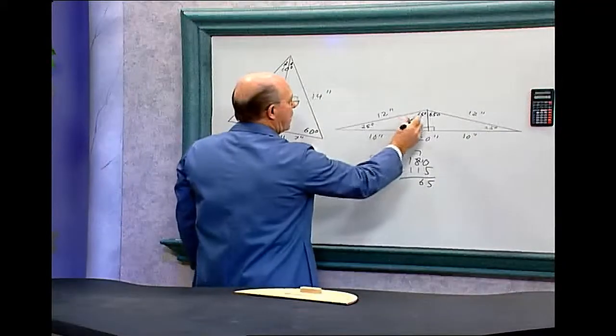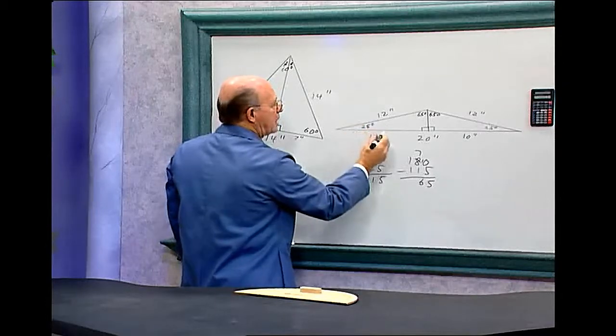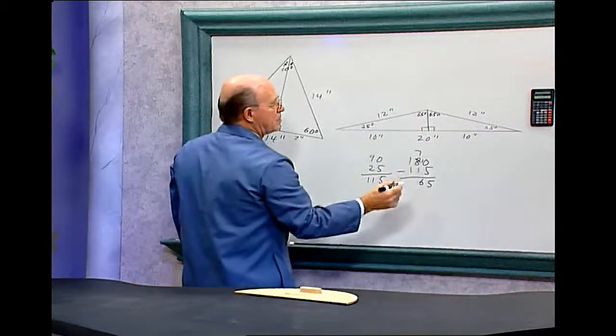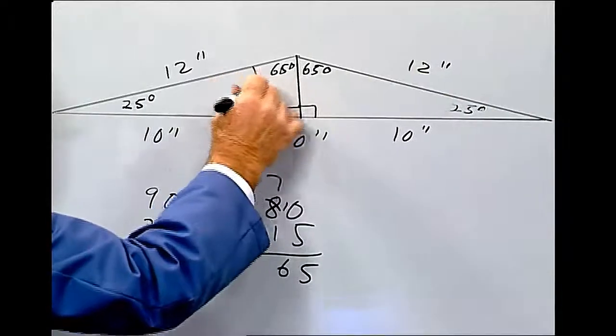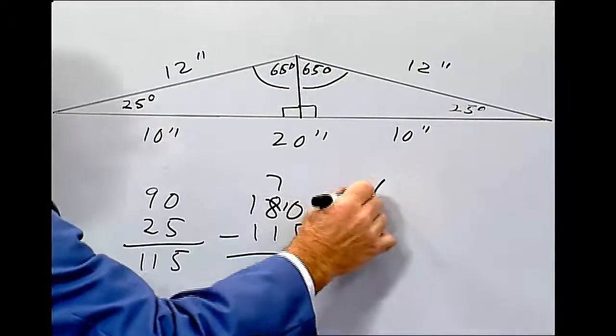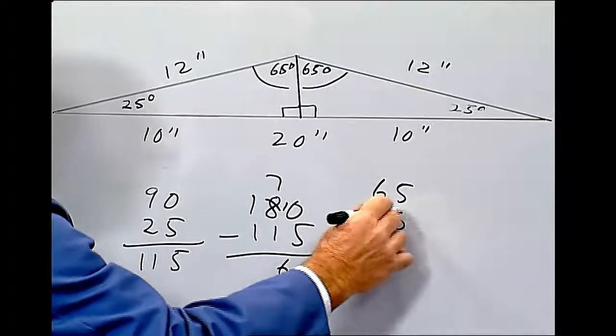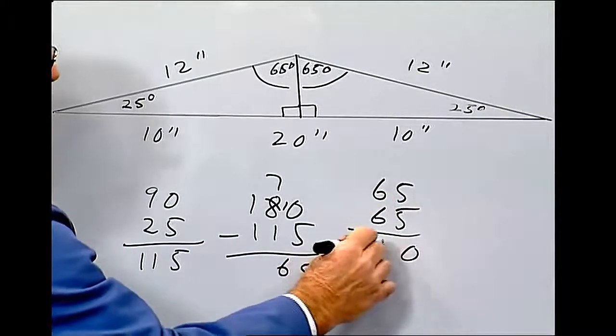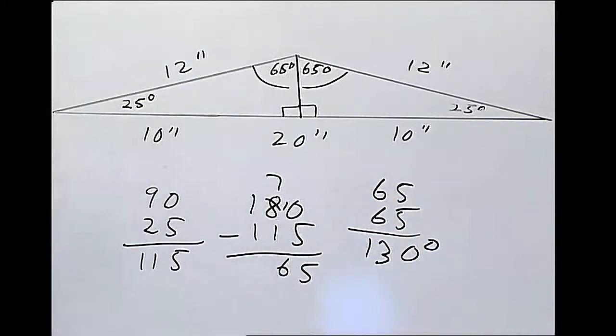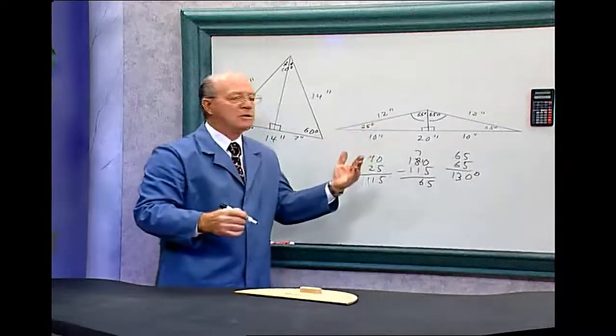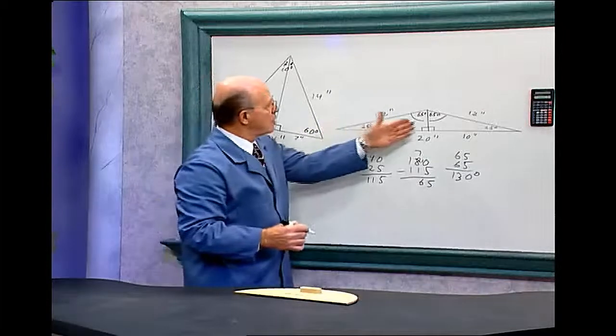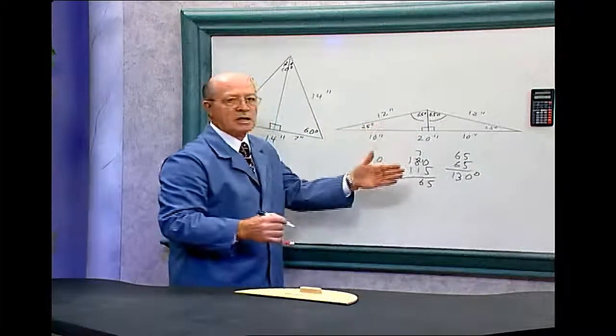65 plus 25 will be 90, plus 90 is 180. The total angle between these two will be 65 and 65, which is 130 degrees. Knowing this and using logic will help you figure out the angles and the sides.